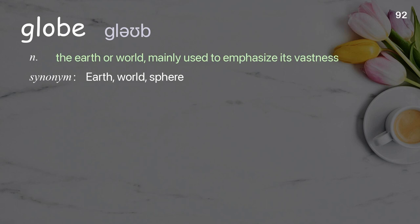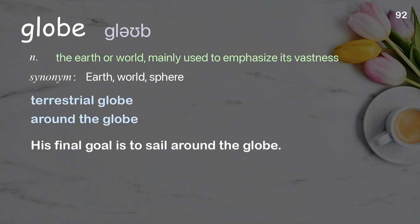Globe: the earth or world, mainly used to emphasize its vastness. Examples: terrestrial globe, around the globe. His final goal is to sail around the globe.